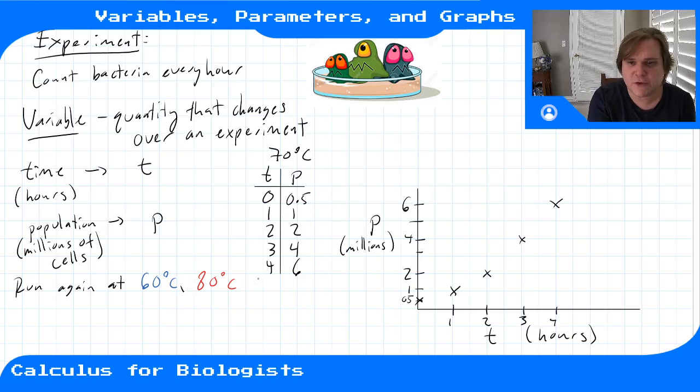So let's say you do this, you collect a bunch of data, and we'll just skip to plotting it. Let's say that at 80 degrees Celsius we start at the same place but we grow a little bit faster, and then at 60 degrees Celsius we also start the same place but it grows slower.